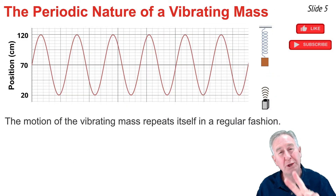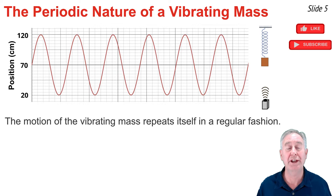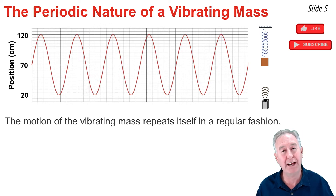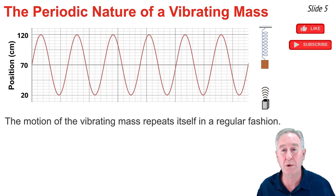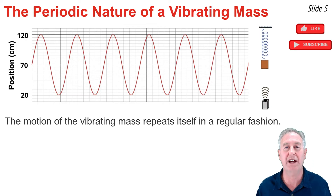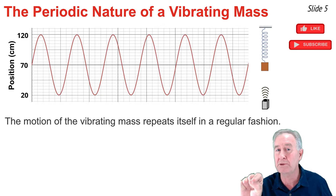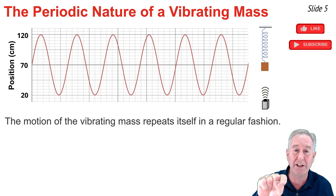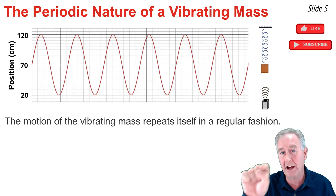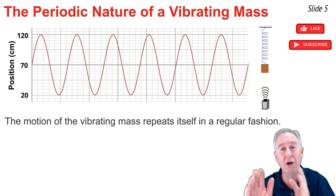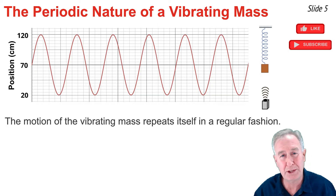I said there are two words that describe an object in periodic motion: regular and repeating. The object vibrates back and forth repeatedly over the course of time in a regular manner. We can look at this position-time graph and notice that there's a shape that repeats itself. Starting at time equals zero at the 70 centimeter position, the graph goes from 70 up to 120, back down to 70, then down to 20, and back up to 70 again. That shape — up, down, down, up — repeats itself over and over again across this position-time graph.